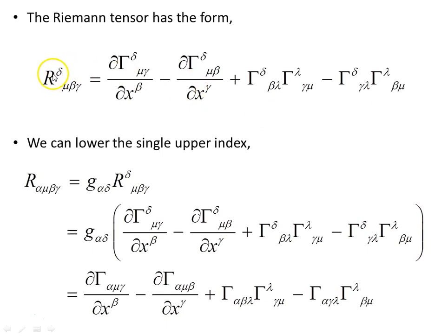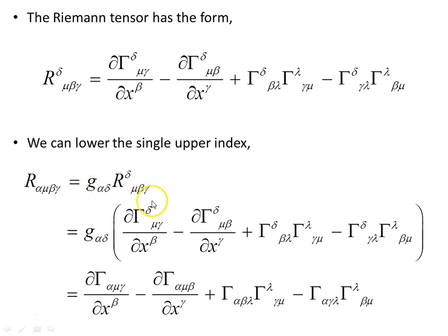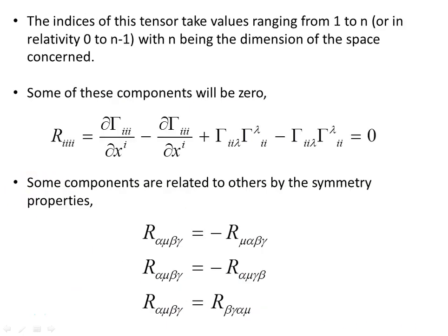The Riemann tensor has this form, generally expressed with one index up and three down — one contravariant, three covariant. We can lower the single upper index using the metric, and when we do that we end up with an expression with all indices in the tensor lowered. The indices of this tensor take values ranging from one to n, or in relativity zero to n minus one, with n being the dimension of the space concerned.